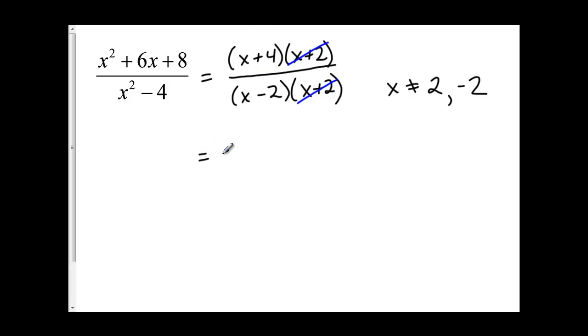So my final answer, on the top, I'm left with an x plus 4. On the bottom, I'm left with an x minus 2, and I cannot simplify this anymore. I can't cancel out my x's, because they are attached to other numbers, which are different. So my final answer in this expression equals x plus 4 divided by x minus 2.